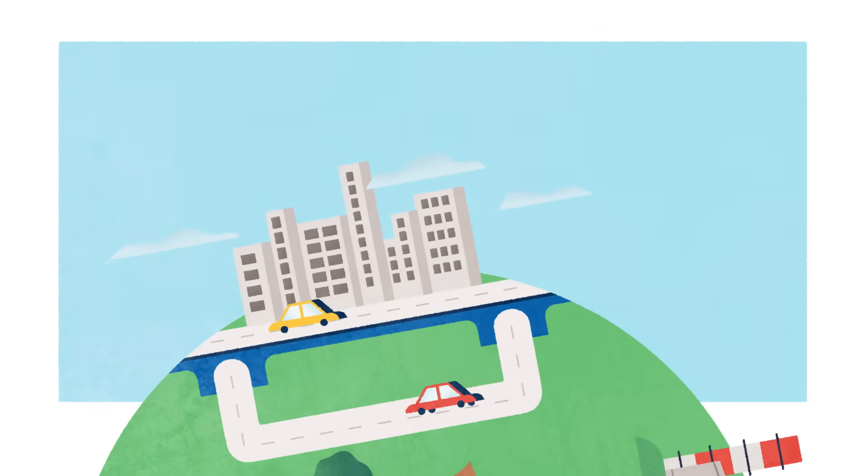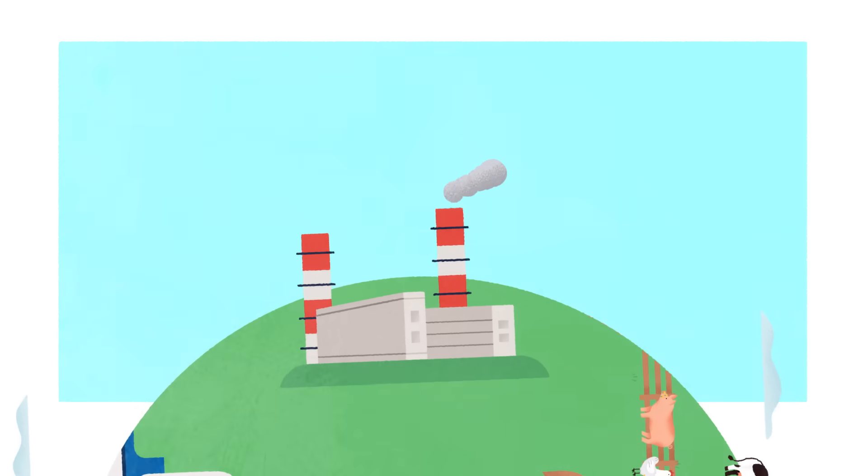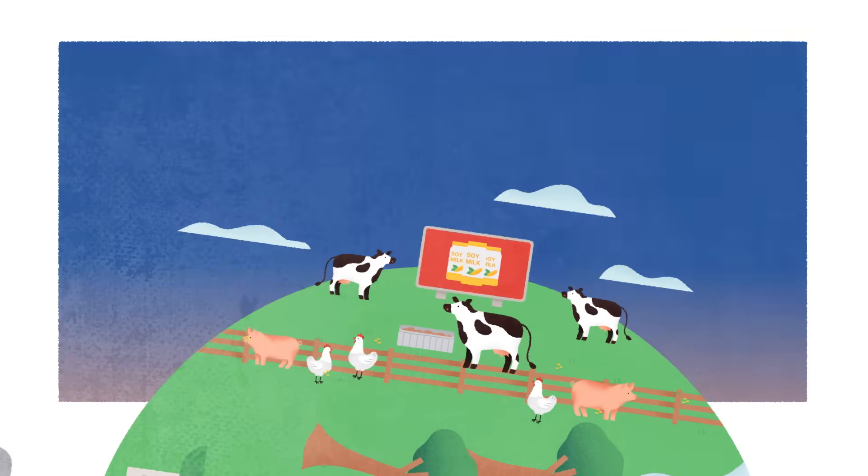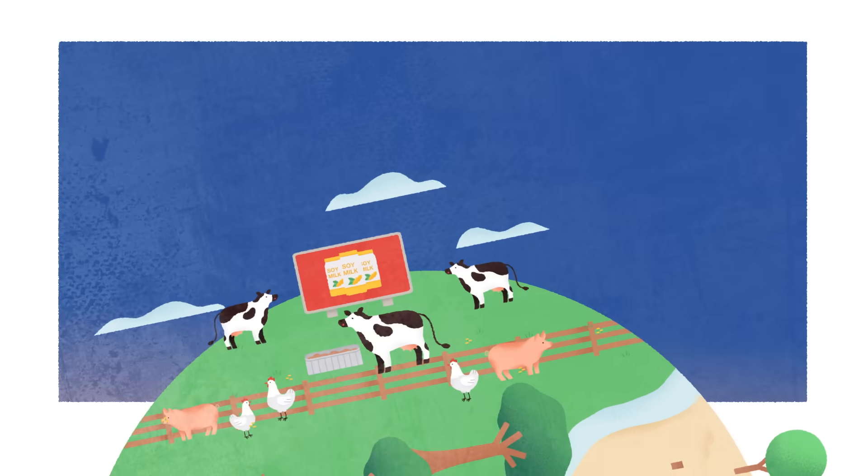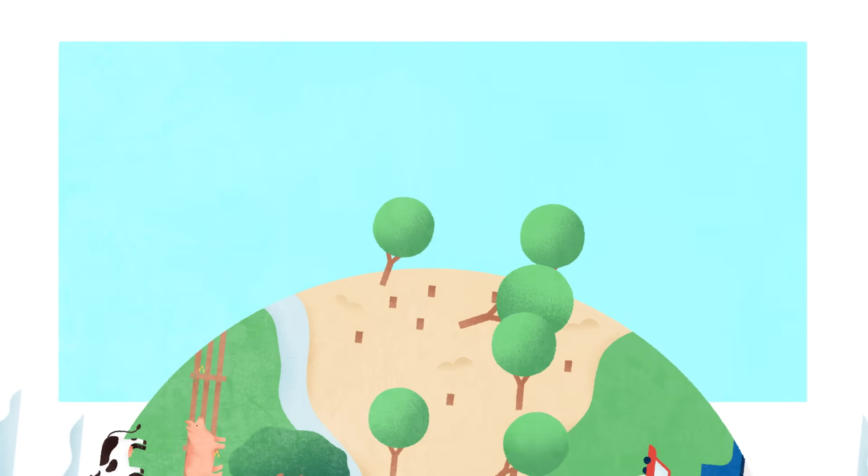Outside our bodies, however, soy is much more worrying. To accommodate the soy farms needed for heavy industry, processed foods and livestock feed, huge swaths of land have been deforested.